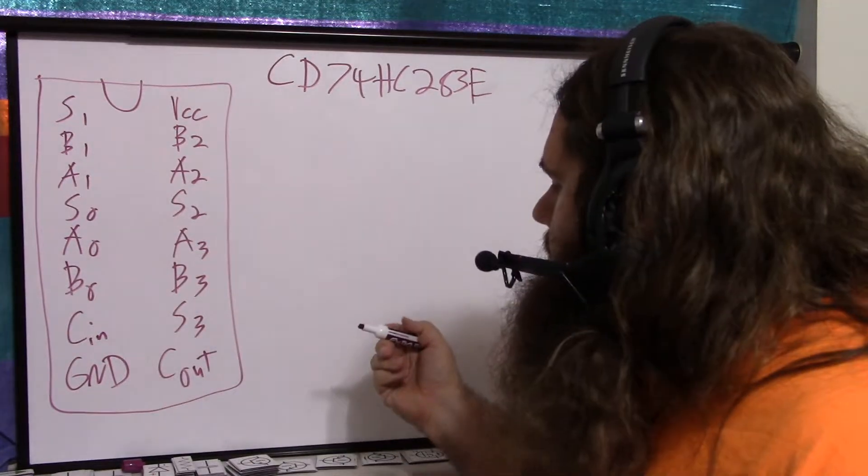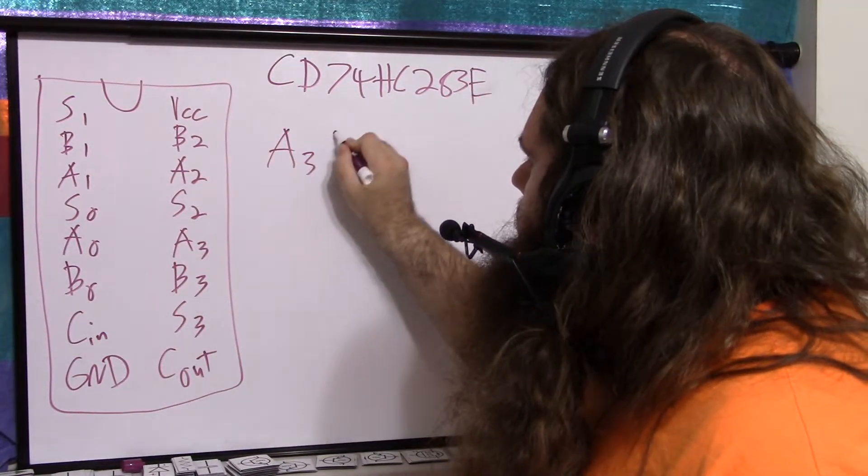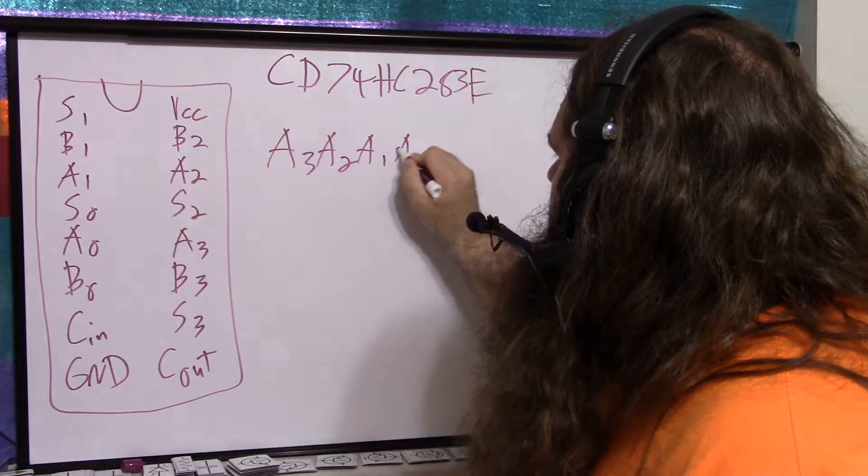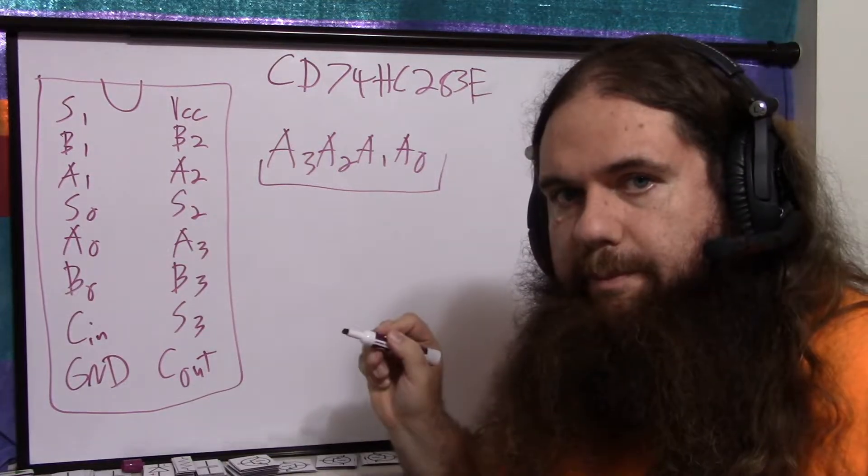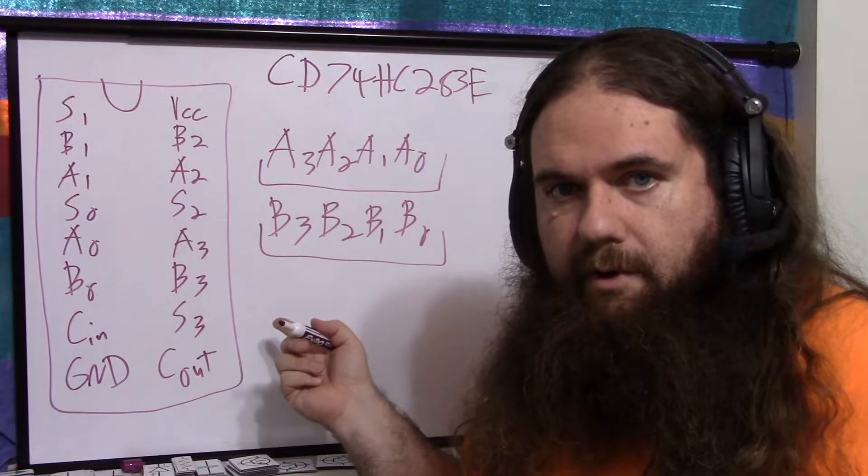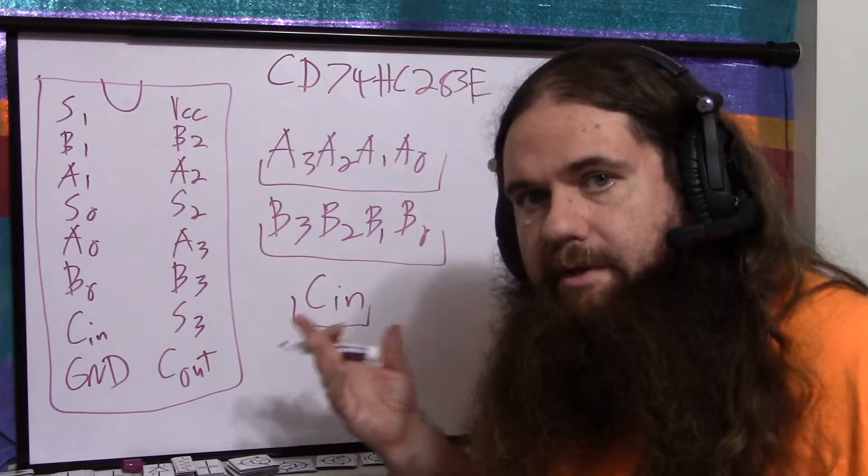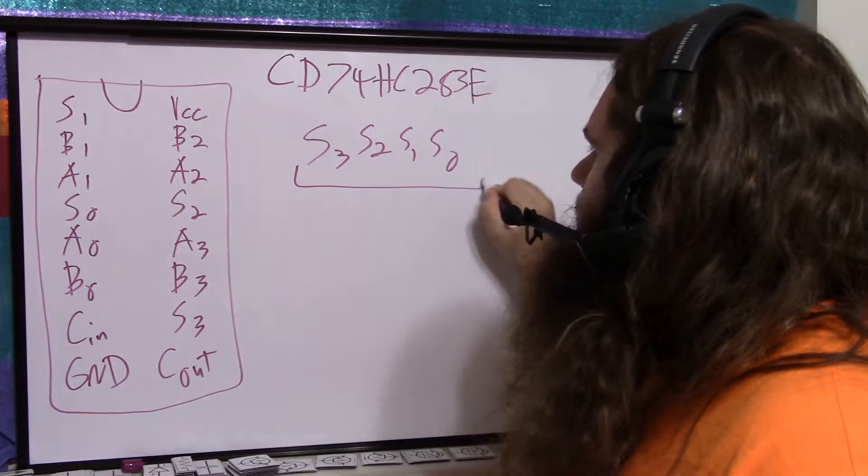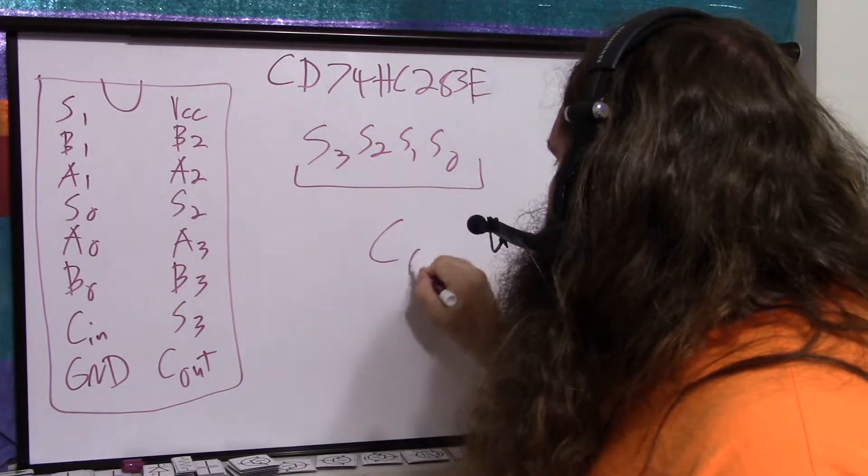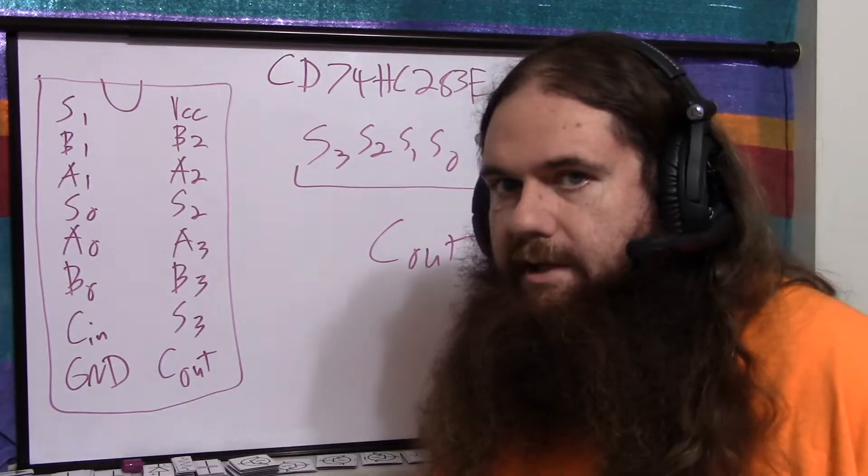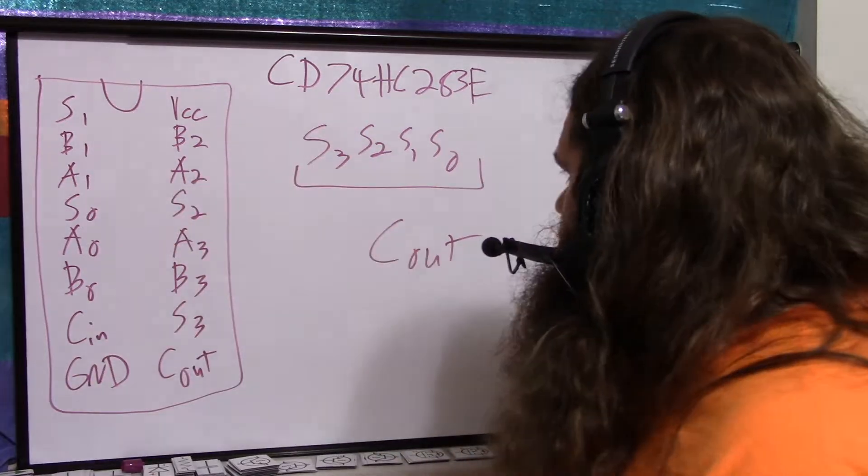So A and B are your inputs. So you've got A3, A2, A1, A0 as a 4-bit input. The same thing here, it's a 4-bit number for B, and then carry in. Carry in is a 1-bit number. And then the output is S, a 4-bit number, and then carry out. And then you have VCC and ground. So that's all the pins. It's very nice and easy.